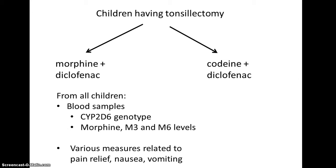What I'd like to do now is share some data from a study published in the British Journal of Anaesthesia in 2002. The purpose of this study was to investigate the genotype, phenotype, and morphine production from codeine in children who were undergoing a tonsillectomy, and then to compare the analgesia obtained in children who received codeine versus children who received morphine.